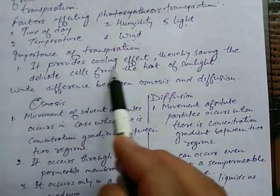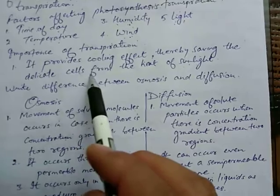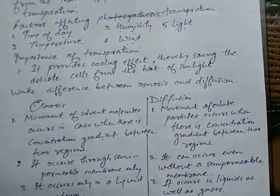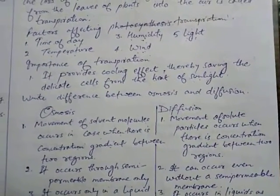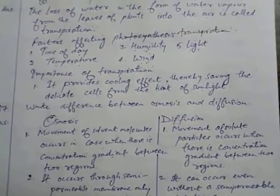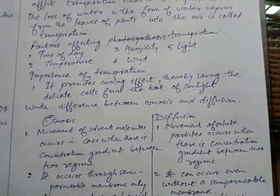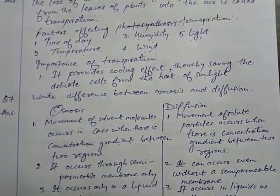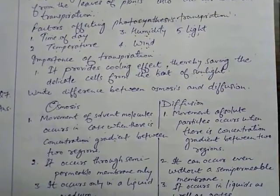The third part of this question is importance of transpiration. It provides cooling effect, thereby saving the delicate cells from the heat of sunlight. As the plant body loses water, it cools down and protects the soft or delicate cells from damage.